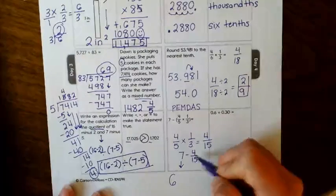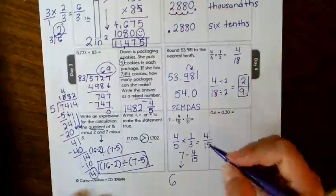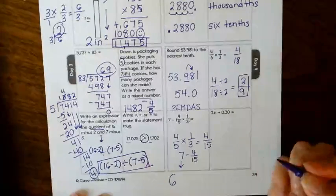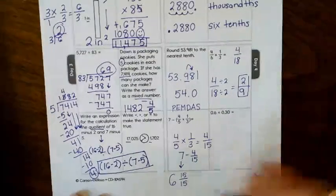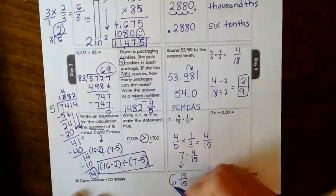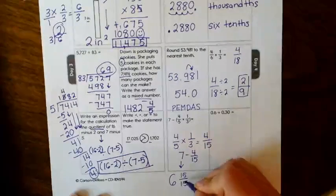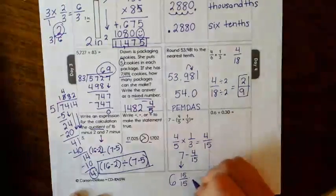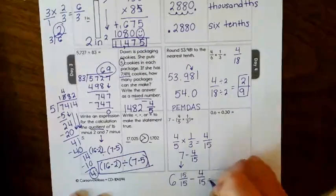So let's use the denominator we're already working with just to make it easier. So over here we have a 15. So is 15 over 15 a whole? Yes. So 6 and 15 over 15 is equal to 7 because you have a 6 plus a whole equals 7. Now we're going to subtract our 4 fifteenths.